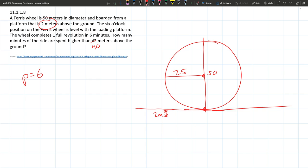At the six o'clock position, the wheel completes one full rotation in six minutes, so I'm going to go ahead and write the period is six. How many minutes of the ride are spent higher than 42 meters above, or 40 meters above the ground?